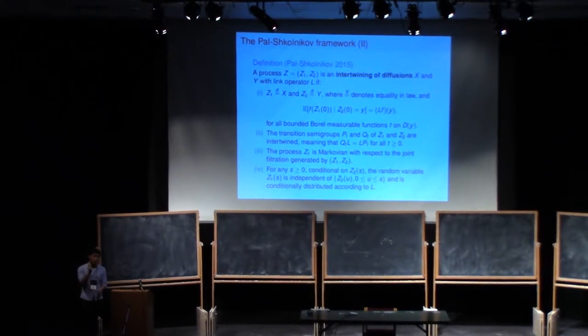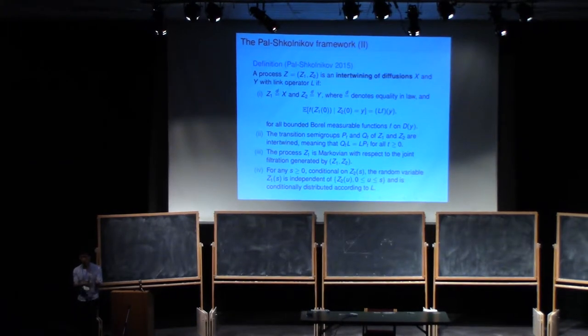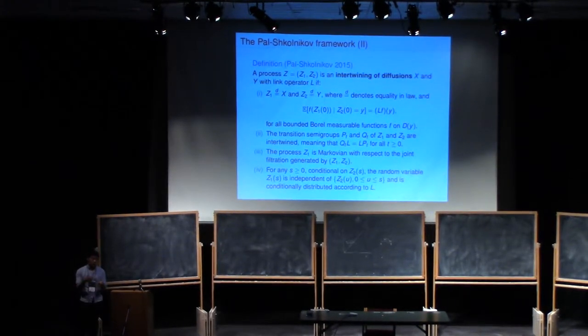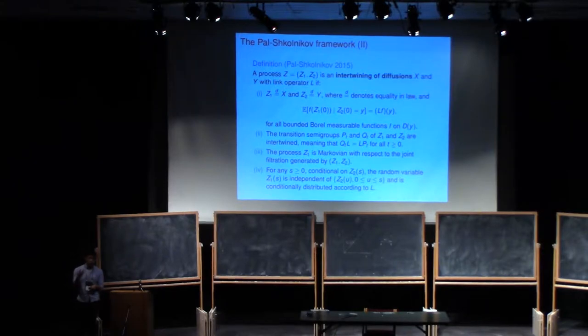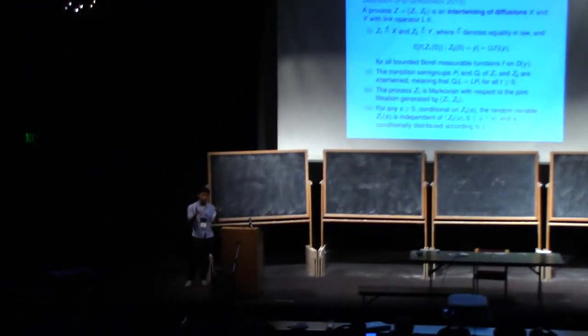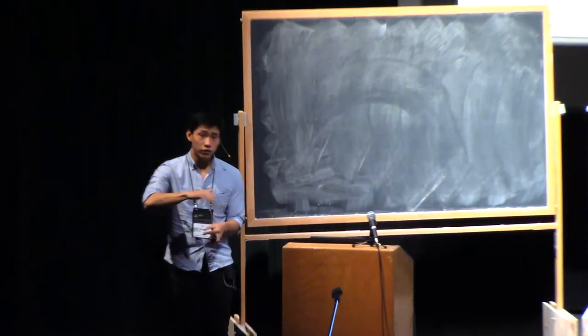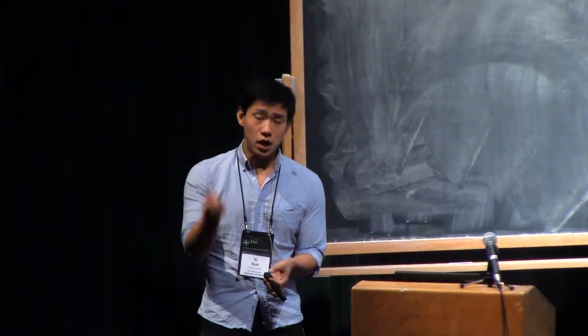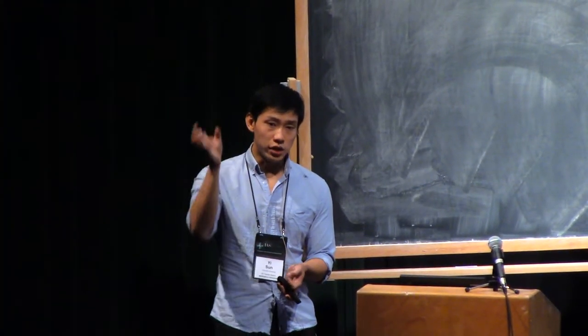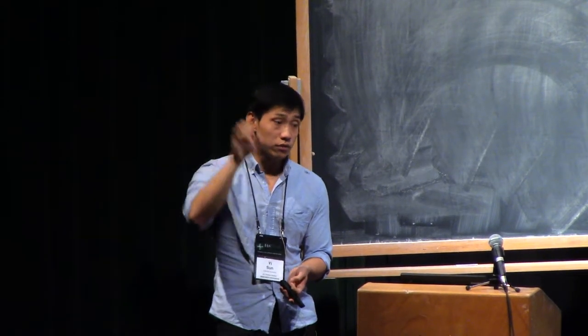And finally, what I want is that the process X somehow evolves independently. So really all the coupling is happening with the process Y. And this is going to correspond to the fact that if you look at the Laguerre-Warren process, the first K levels evolve independently of the K plus first level. So really all the action is happening at the top level, which would be Y here.